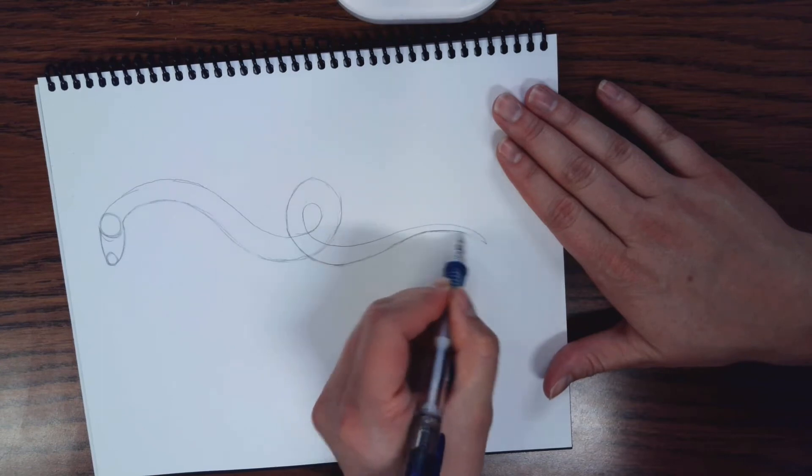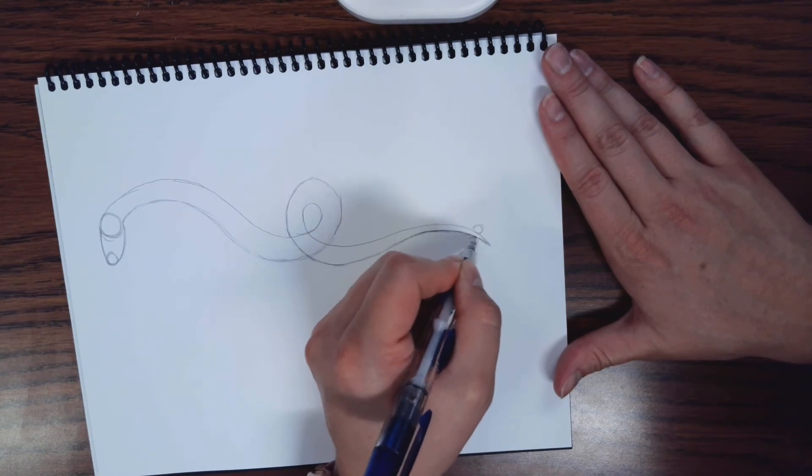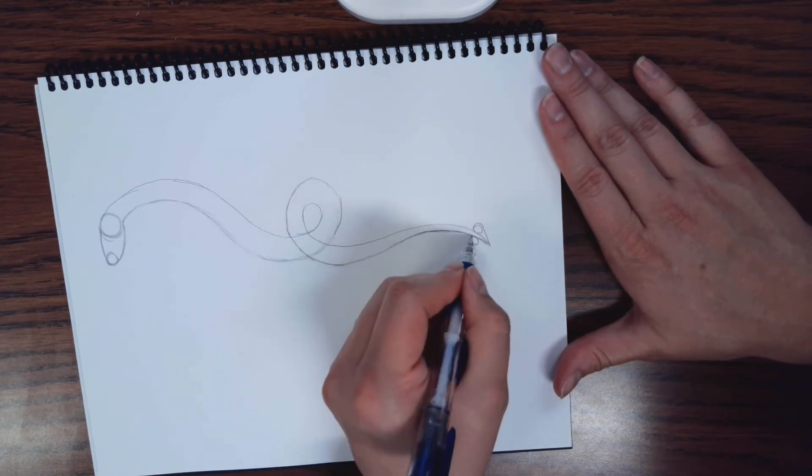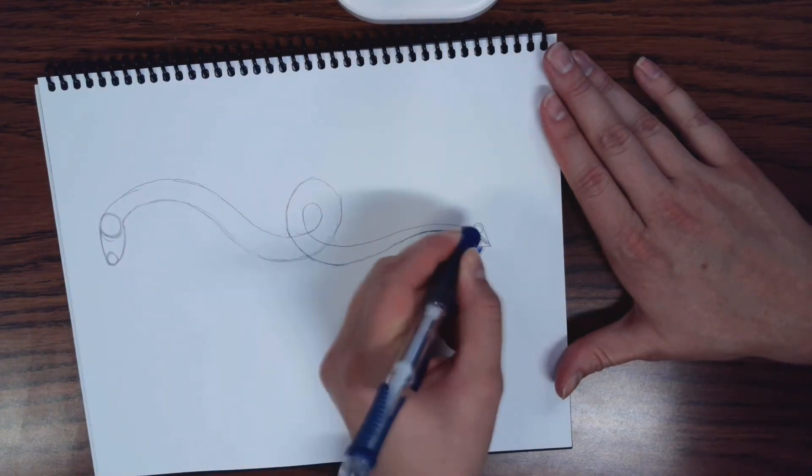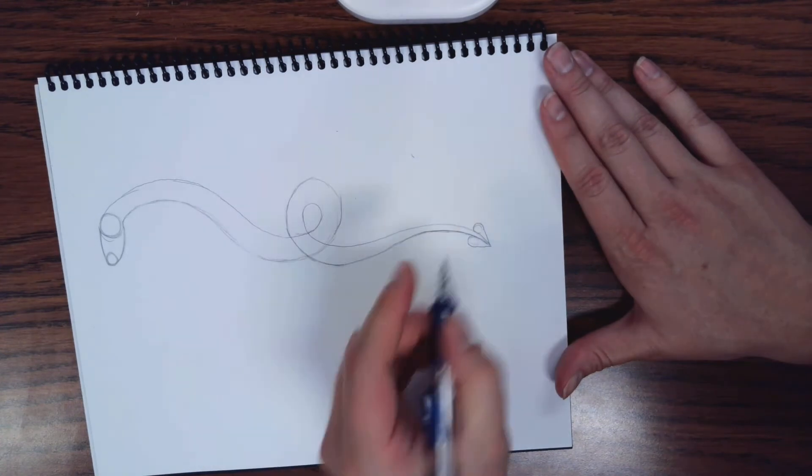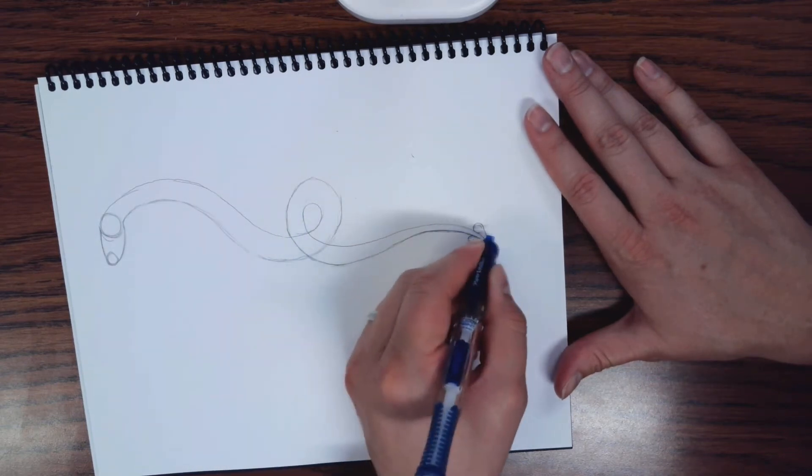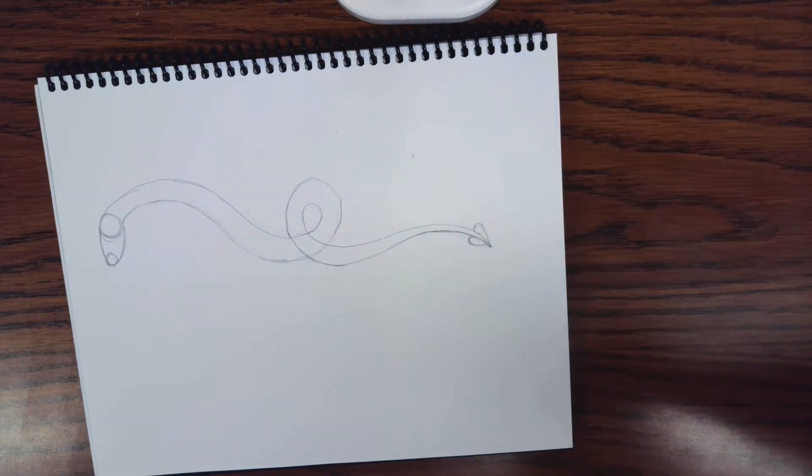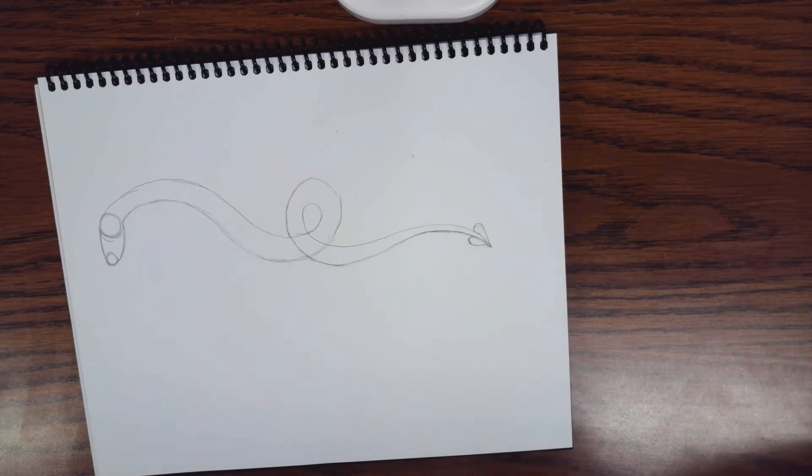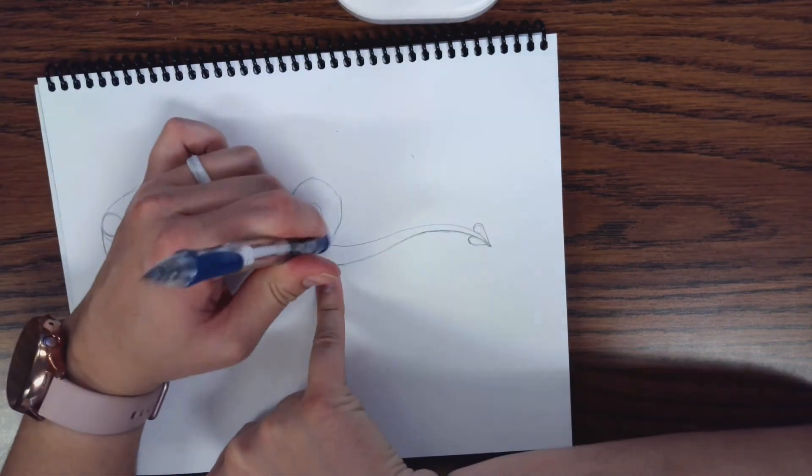I'm going to taper my tail just a little bit more because I want more of a sharp point at the end. Then on the sides, I'm going to draw two circles and connect with a heart shape. The circles allow for a more accurate shape. And then once I'm done with the circles, I'm going to go ahead and erase them.